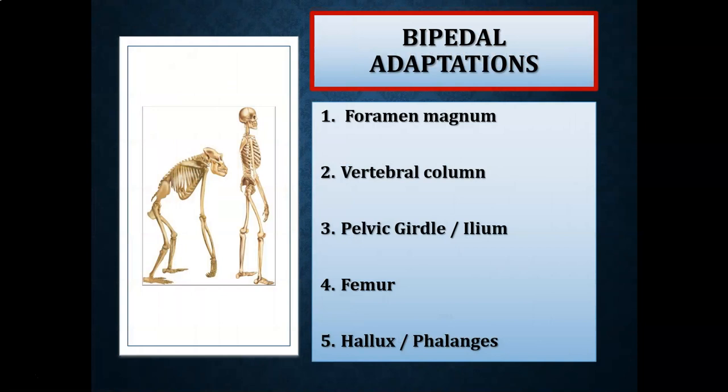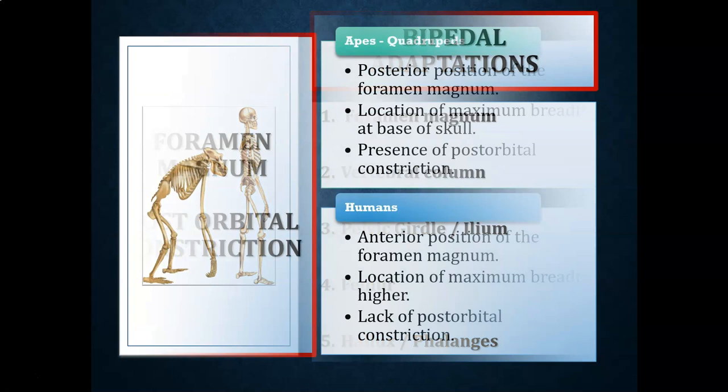Now let's look at the anatomical or physical changes associated with bipedalism. We'll examine five features: first, the foramen magnum; second, the vertebral column; third, the pelvic girdle and especially the ilium; fourth, the thigh bone or femur; and fifth, the hallux — the big toe — and the phalanges, the hand and finger bones.